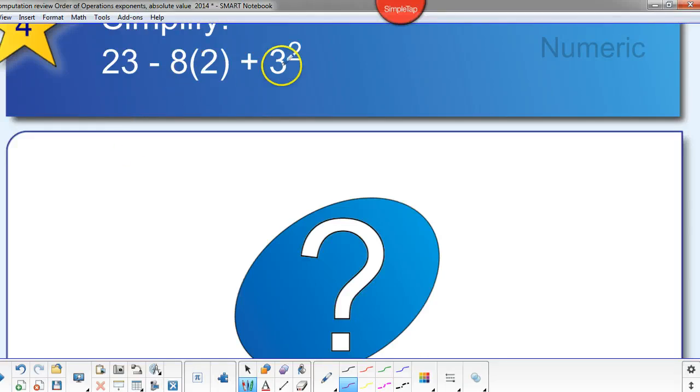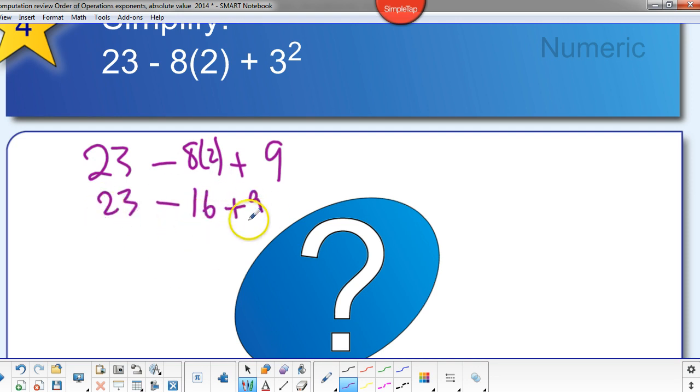Okay. So we should have done the exponent first, gives us a nine. Alright. We can bring everything down and do the multiplication next. And then add or subtract. We end up with seven plus nine, which we call sixteen. Is that right? That sounds right.